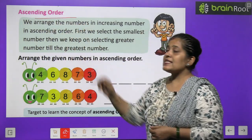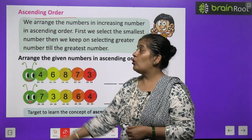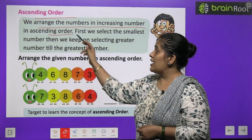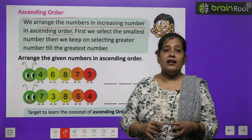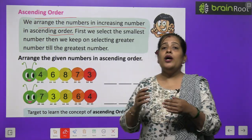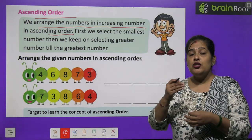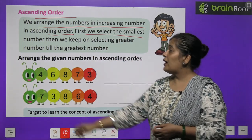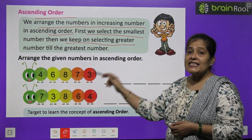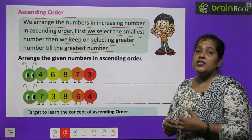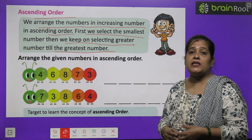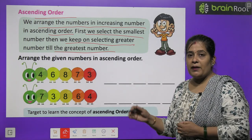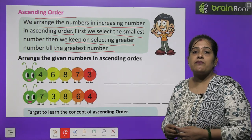The next topic is ascending order. Ascending order kya hota hai? We arrange the numbers in increasing order in ascending order. Ascending order mein haam kya karte hain bachyo — sabhi numbers ko increasing order mein lagate hain. Matlab chhoate se bade ki taraf. First we select the smallest number, then we keep on selecting the next greatest number till the greatest number.